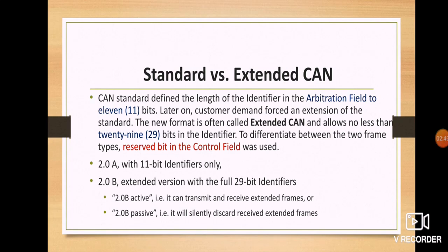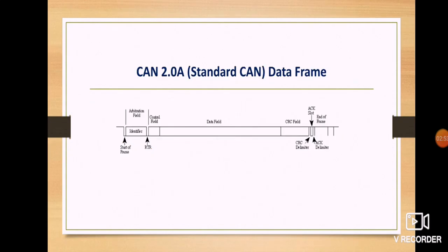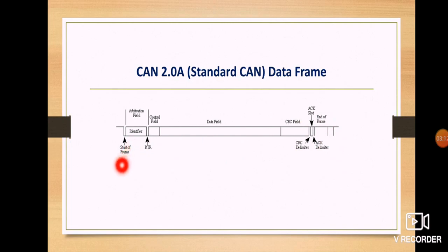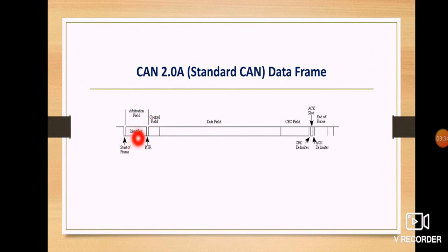Let's look at the structure of 2A. We have the start of frame, then the identifier in the arbitration field, followed by the control field, data field, CRC field, acknowledgement slot, CRC delimiter, acknowledgement delimiter, and end of frame. The start of frame is always the dominant bit, as it enables hard synchronization. The arbitration field prioritizes messages using the identifier — lower identifier gets highest priority, higher identifier gets lowest priority, as CAN uses wired-AND logic.